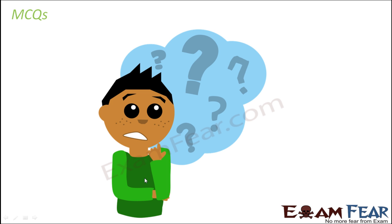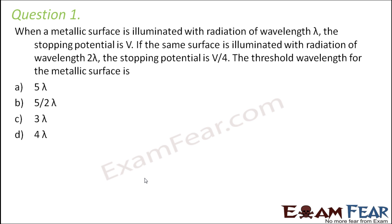Question number one: when a metallic surface is illuminated with radiation of wavelength lambda, the stopping potential is V. If the same surface is illuminated with radiation of wavelength 2 lambda, the stopping potential is V/4. Find the threshold wavelength for the metallic surface. This question links stopping potential with wavelength, so we need to use the photoelectric equation in that form.